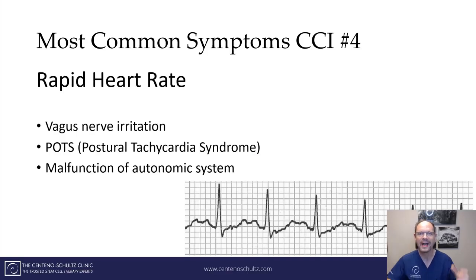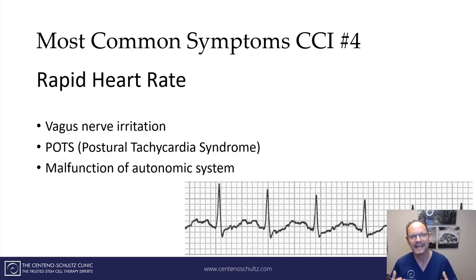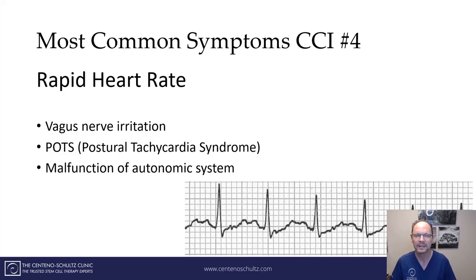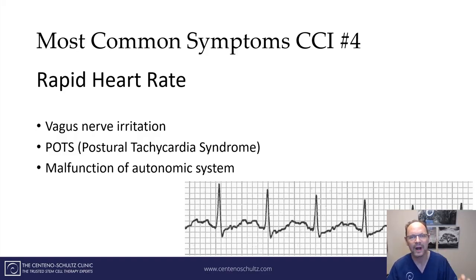Symptom number four is an increased heart rate. There are a couple of reasons for this: it may be irritation of an important nerve called the vagus, it could be a syndrome called POTS — postural tachycardia syndrome — but most importantly it is a malfunction of your central nervous system. It is very common, and oftentimes patients spend lots of money having a workup at the cardiologist and it's all normal.